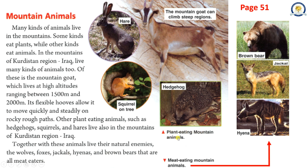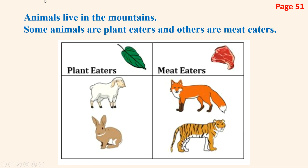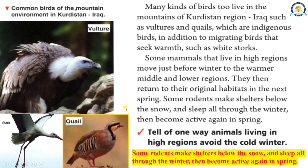Plant-eating animals include hare, squirrel, mountain goat, and hedgehog. The mountain goat can climb steep regions. Meat-eating animals include brown bear, jackal, and hyena. Many kinds of birds also live in the mountains of Kurdistan region Iraq, such as vultures and quails, which are indigenous birds, in addition to migrating birds that seek warmth, such as white storks.